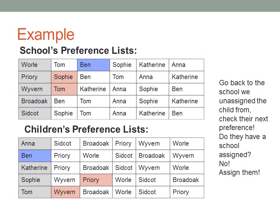Now that we have unassigned Tom from Well, Well no longer has a student, so we must go back and assign them another one. We start from the student after Tom, look at the next preference, Ben, and see if he has been assigned a school. Ben hasn't been assigned a school, so we can assign him to Well.